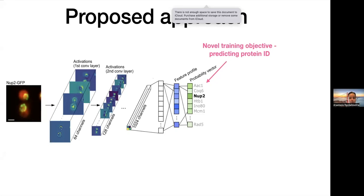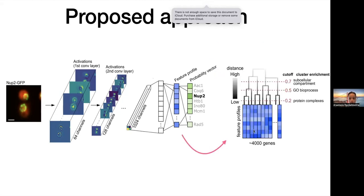Our approach contains a novel training objective: predicting protein ID. We pass an image through a convolutional neural network and try to predict the actual protein from the input image. This is a self-supervised approach because we don't use any manual or human-annotated labels — instead, we rely on information contained in the input image, namely protein identity. After training, we use the feature profiles derived from the last hidden layer, which contain a great variety of functional information for many types of downstream analysis.